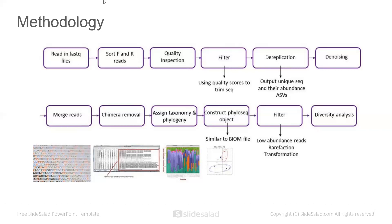The DADA2 pipeline begins by reading in FastQ files. FastQ files are essentially FASTA files but with quality scores included. Then we sort the forward and reverse reads. Forward and reverse reads mean we submit two types of files: single-end reads, which have been separated into forward and reverse sections, and paired-end reads, which contain both forward and reverse reads in one file.